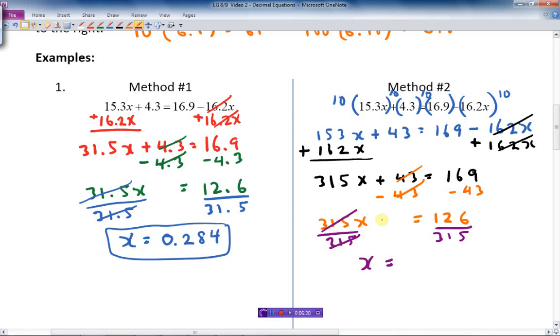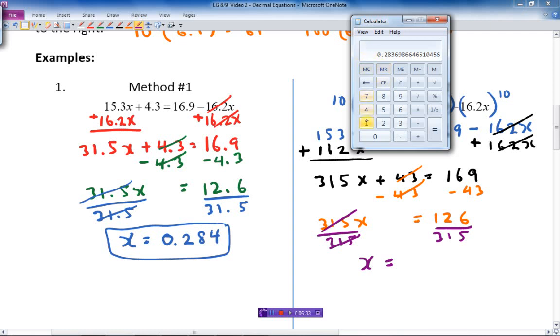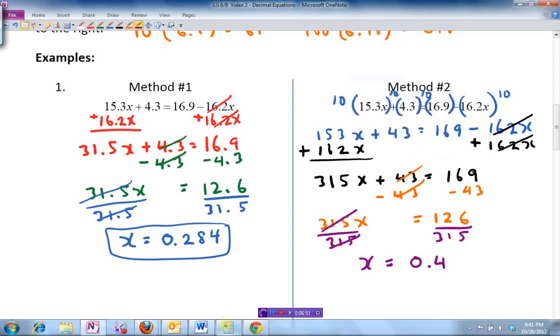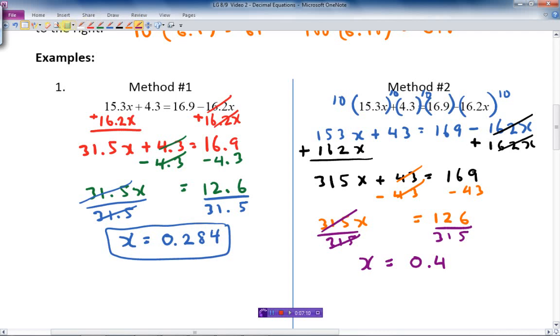Let's just make sure. Let me bring up the calculator again. 126 divided by 315. 0.4. That sounds right, actually. Let's check the other side and make sure we did that right. 12.6 divided by 31.5. Oh, that was 0.4 as well. So good thing we checked. Let's just erase that and correct it to 0.4. There. So you can do it either method, with the decimal or without, if you like to remove the decimals.